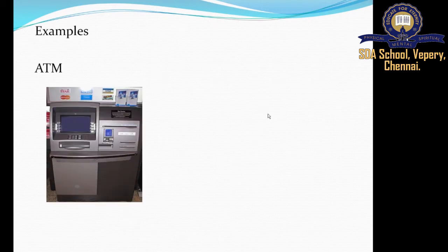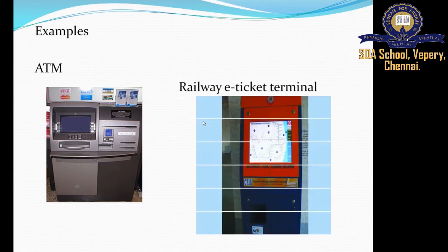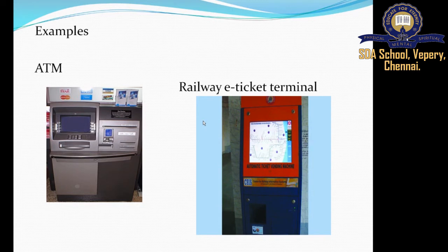Examples of customer self-service are the ATM, where instead of waiting in a long queue at the bank you can use a touch screen ATM to get your cash, and the railway e-ticket terminal — an automatic ticket vending machine where you get tickets instead of standing in a long queue.